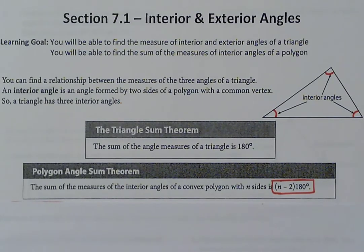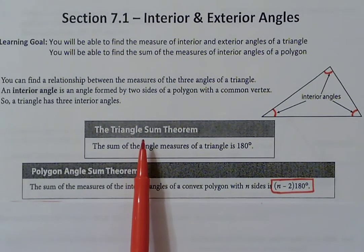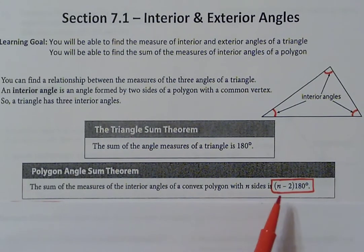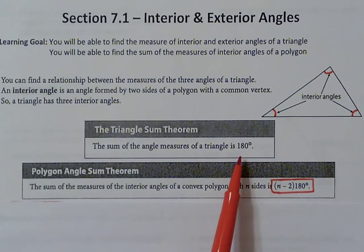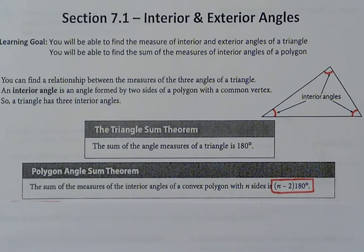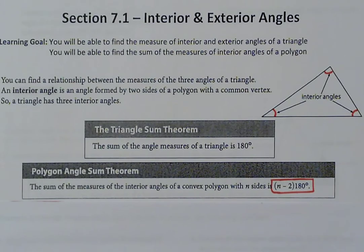To check it, let's try with a triangle. A triangle has three sides, so I plug 3 in for n: 3 minus 2 is 1, and 1 times 180 is 180, which matches what the sum of the angles in a triangle should be. When we talk about the sides of different polygons, a polygon refers to a shape like a triangle. Other examples are quadrilaterals, pentagons, hexagons, heptagons, octagons, nonagons, decagons — it just refers to a shape that has sides.